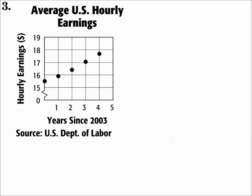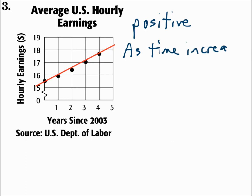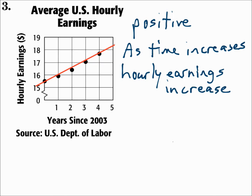Number three: average U.S. hourly earnings. This compares the years since 2003 and hourly earnings. If you imagine a line going through those points, it would go upward left to right — this is a positive correlation. As time increases, hourly earnings increase. Since x increases as y increases, that's a positive correlation.